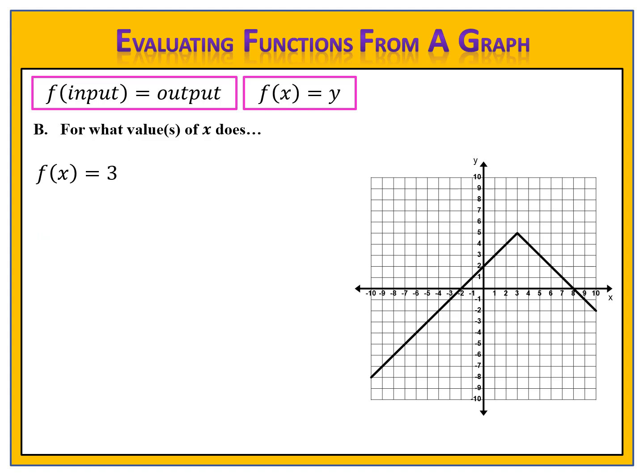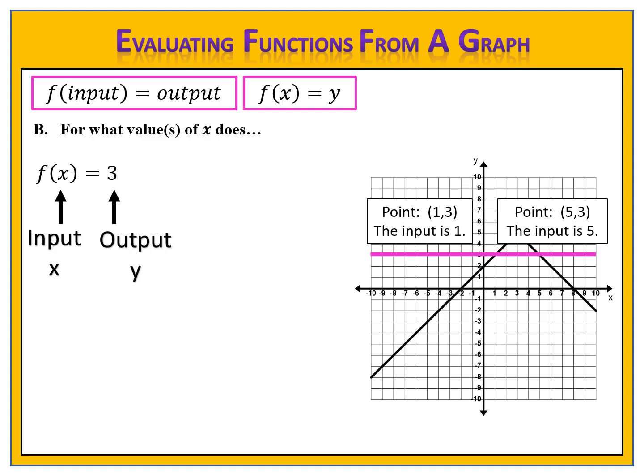Here's one more for you to try. Can you determine the value or values for which f of x equals 3? Please pause the video. The output is 3, so we draw the line across the graph where the output is 3. Our graph intersects that line at two different places: (1, 3) and (5, 3). The input 1 has an output of 3, and the input 5 also has an output of 3. The two x values are x equals 1 or x equals 5.